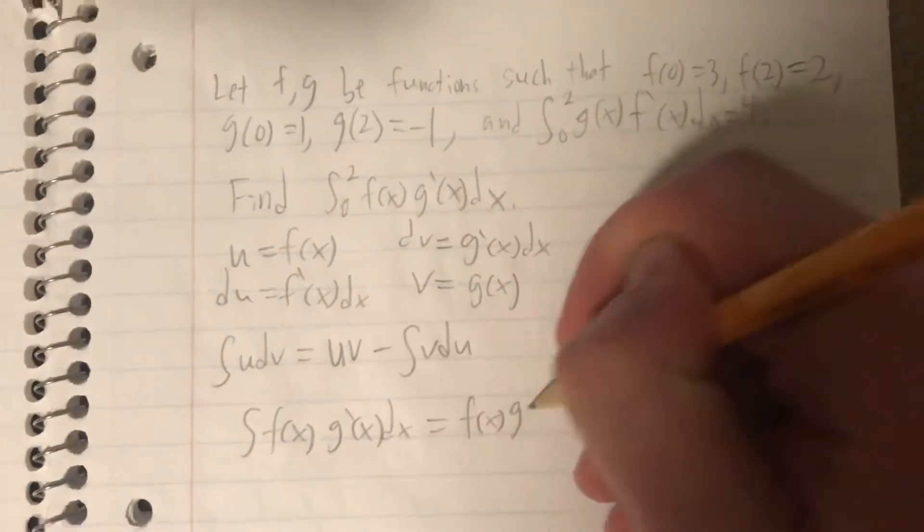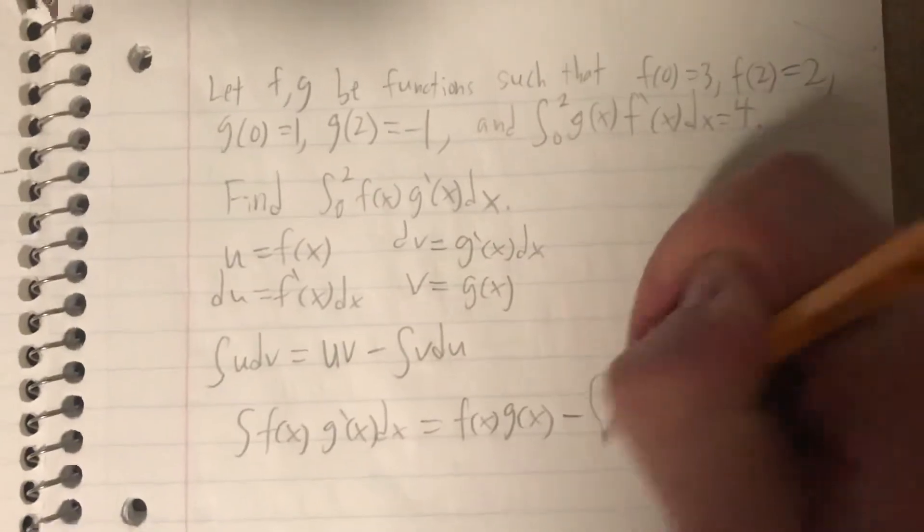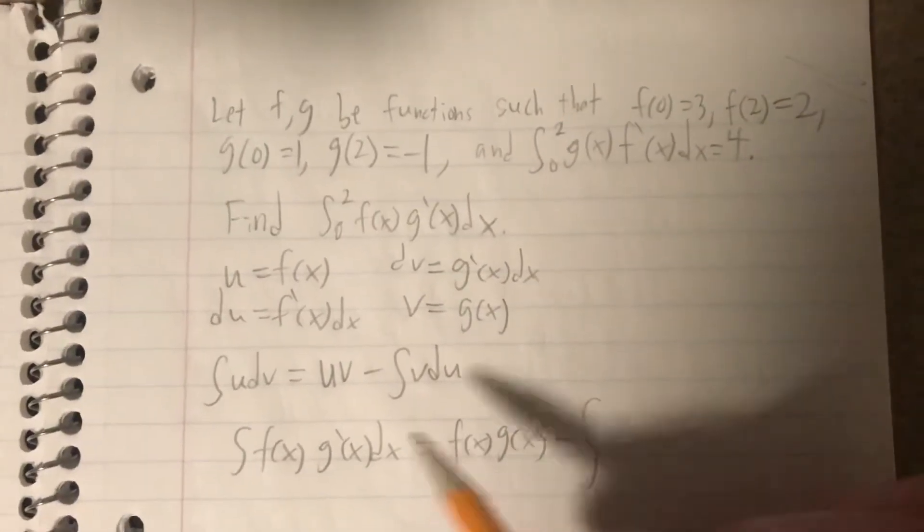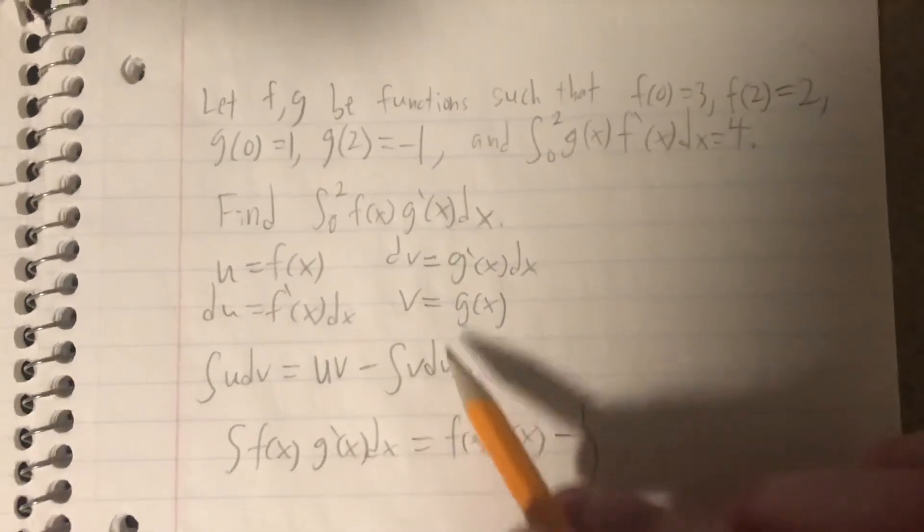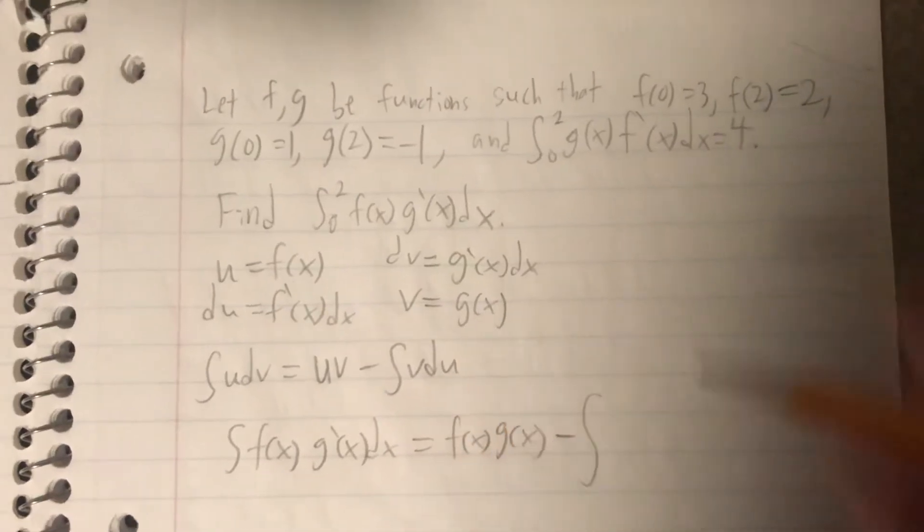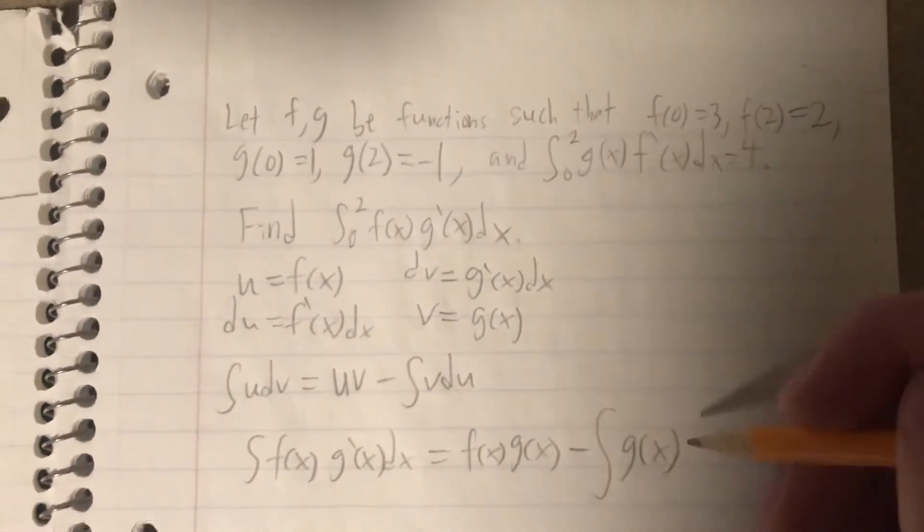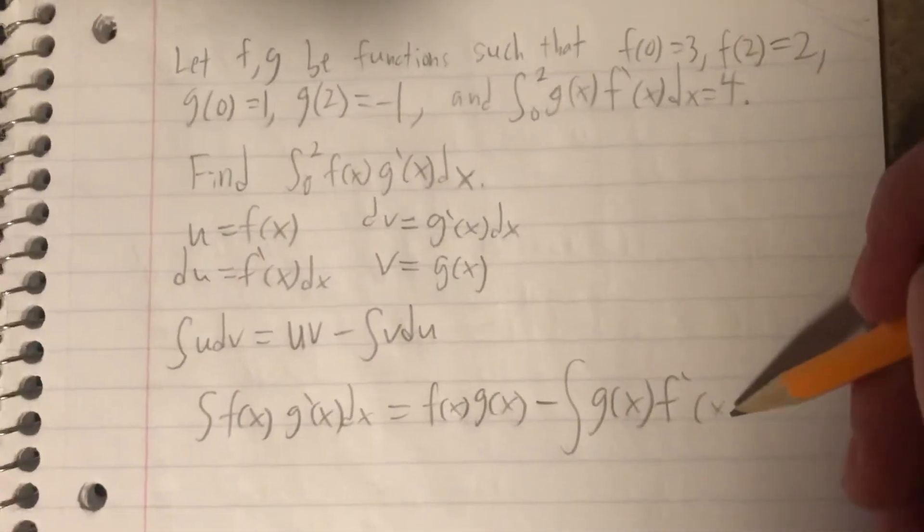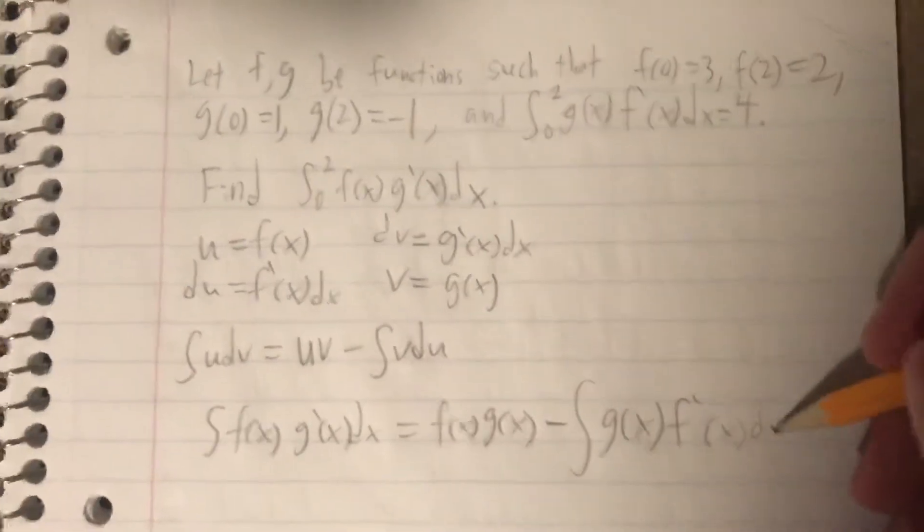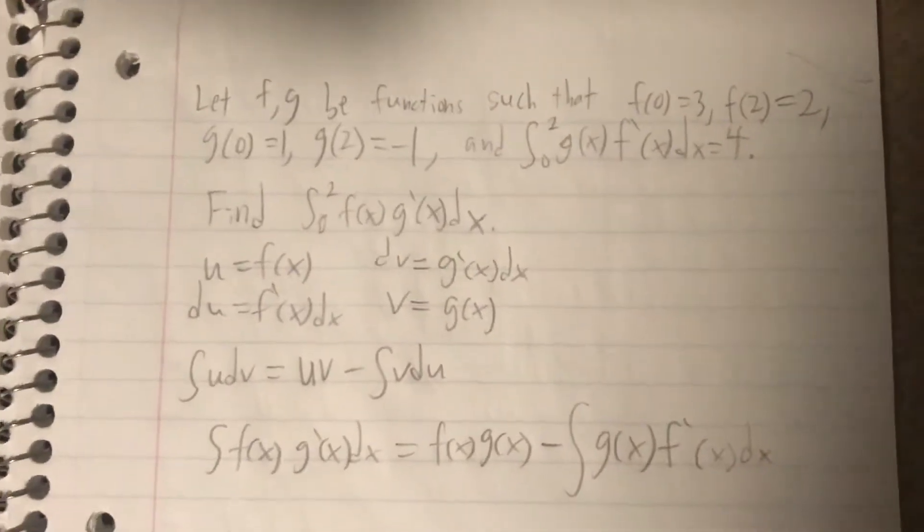so f of x times g of x minus the integral of, and then it's v with respect to du, so v, which is g of x times du, which is f prime of x. So, f prime of x dx, of course. I'll try to mention that. That wouldn't have been good.